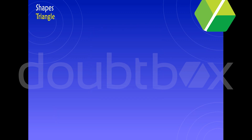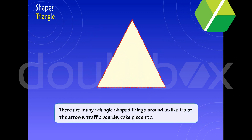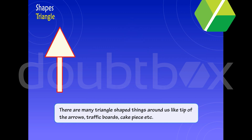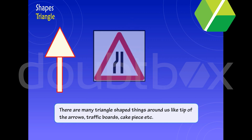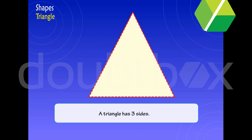Triangle. There are many triangle-shaped things around us, like the tip of arrows, traffic boards, cake pieces, etc. A triangle has three sides.